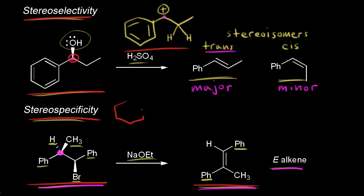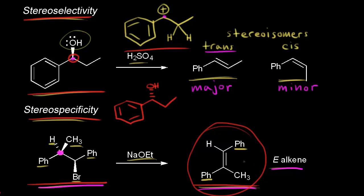For example, we could have started out with the OH on a dash and we would have ended up with the same products. So the stereochemical information in the substrate is not preserved. Thinking about that concept going backwards: for this E-alkene, because the phenyl groups are on opposite sides, we know the stereochemistry at this carbon in the stereospecific reaction. But if we look at the trans product and the cis product here, that does not tell us the stereochemistry of our substrate.